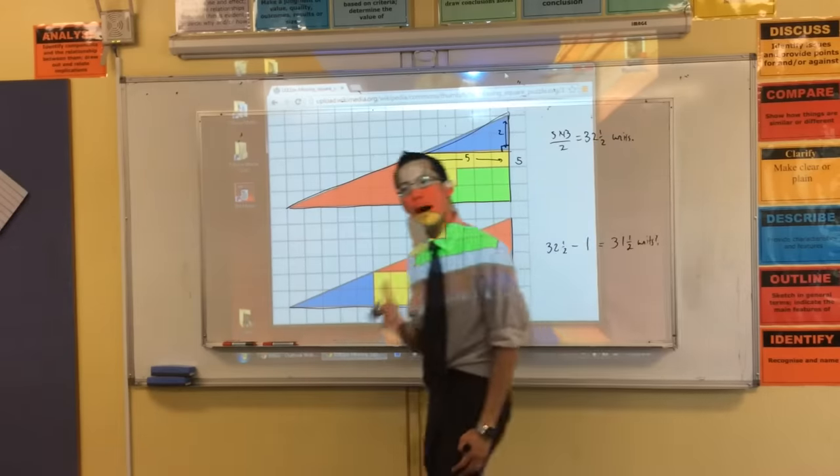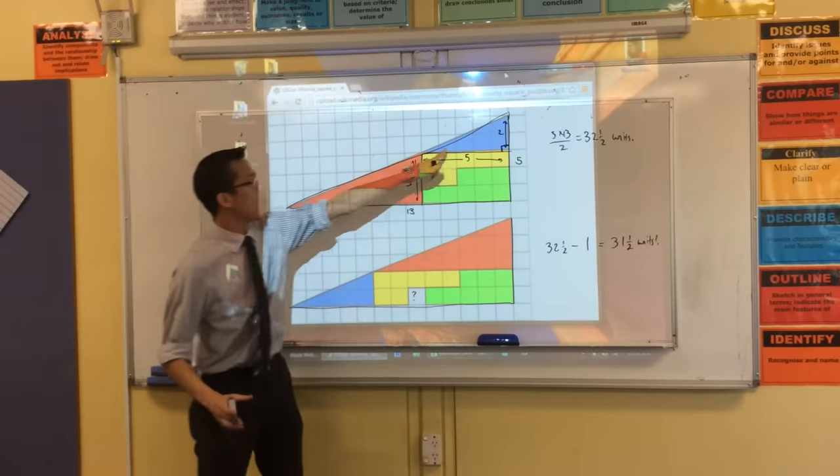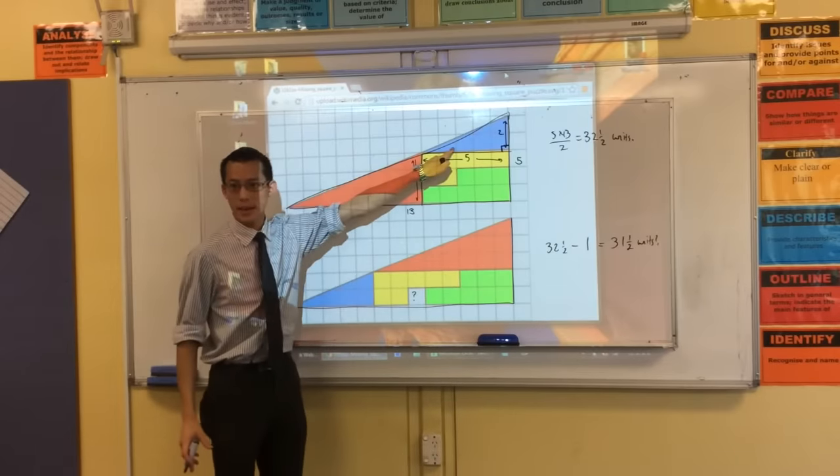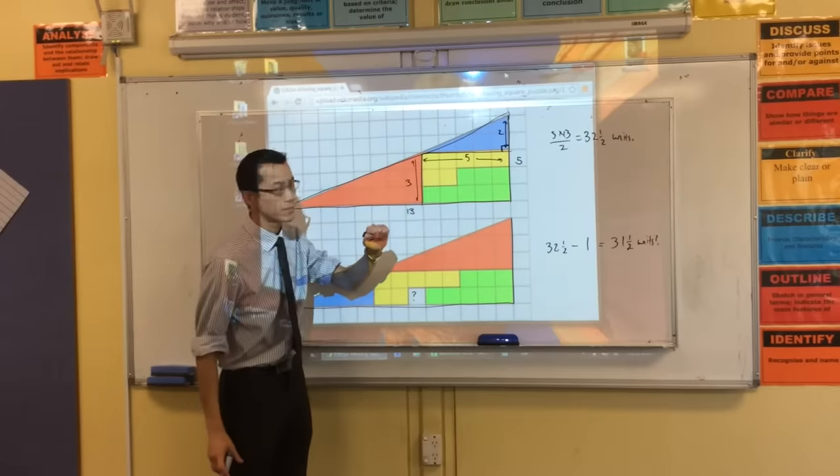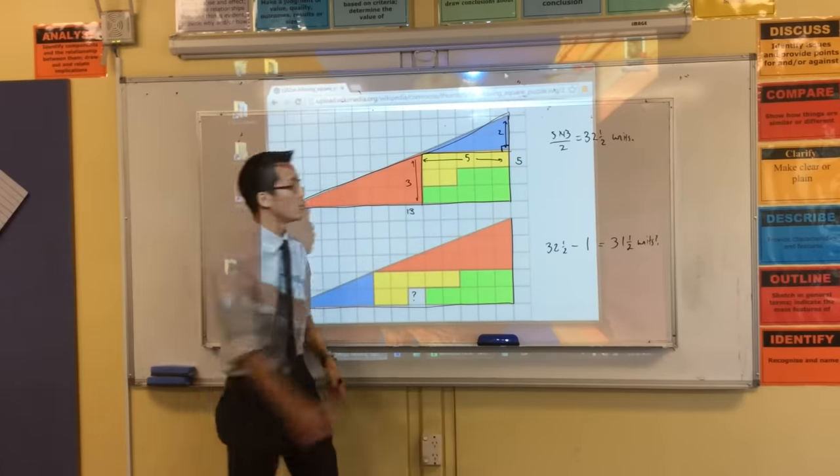So, use trig, how might we determine, for instance, what the size of this angle is? How would we work out its size? Oh, tension. Yeah, it is tan, wouldn't you?